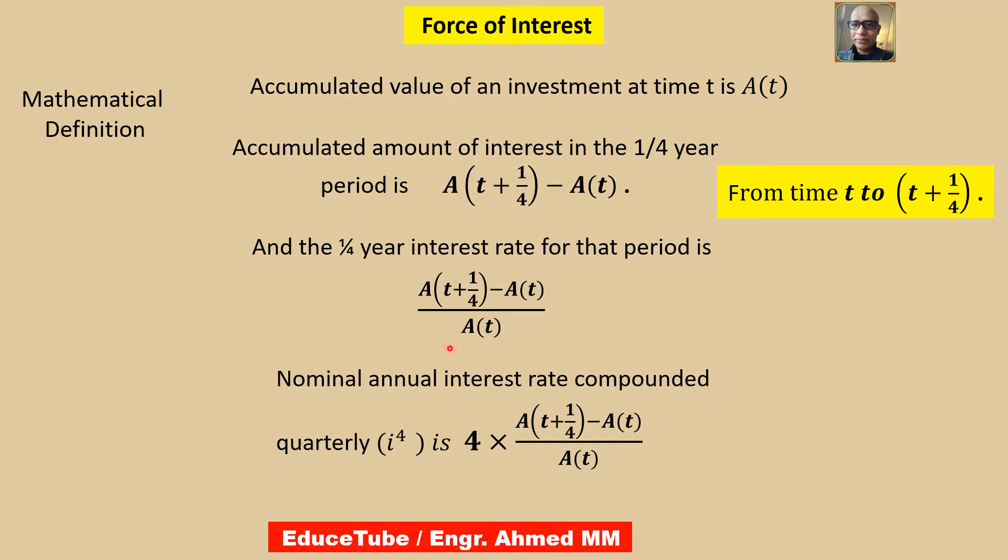The nominal annual interest rate, if it is compounded quarterly (four times in a year), can be written as i^(4), which equals this term multiplied by 4.